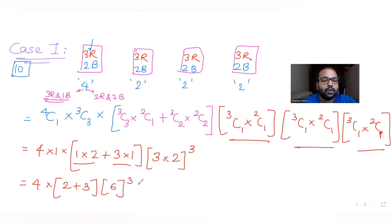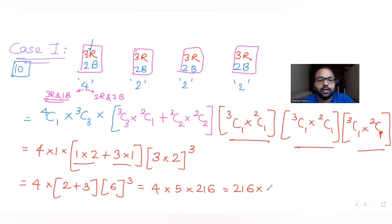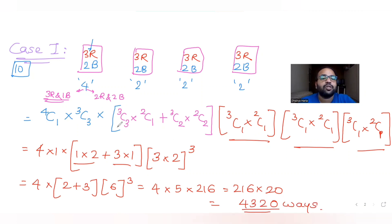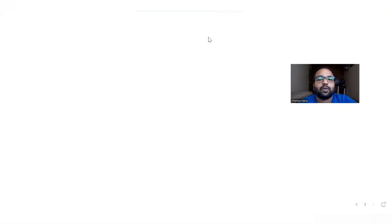Solving this: 4C1 = 4, (3C3×2C1 + 3C2×2C2) = (1×2 + 3×1) = 2 + 3 = 5, and 6³ = 216. So Case 1 gives 4 × 5 × 216 = 4320 ways. Now let's look at Case 2, where I can have three balls chosen from any two bags and two balls from the remaining two bags.